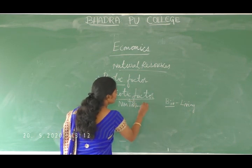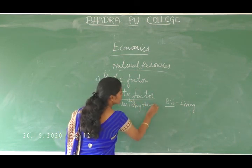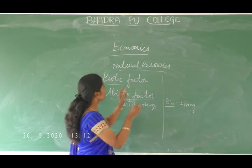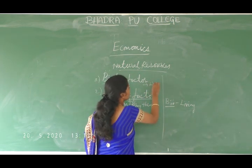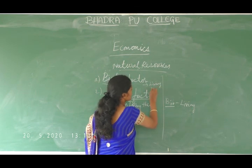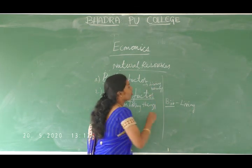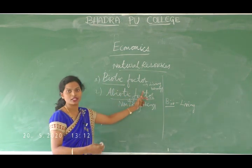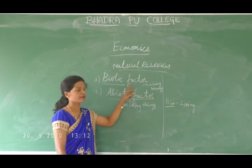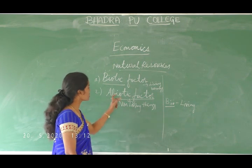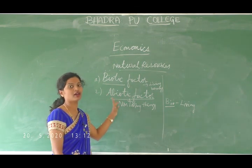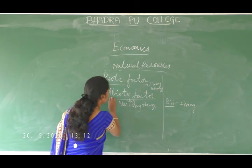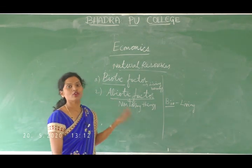Non-living things are abiotic. Bio means living, so biotic refers to living beings or living creatures. Abiotic means absence of living nature or living creatures — these are abiotic factors, that is, non-living things.